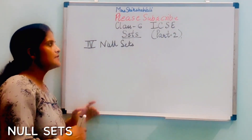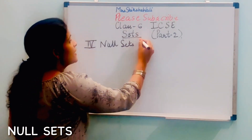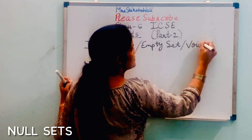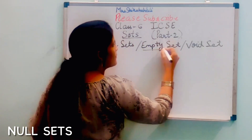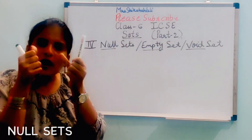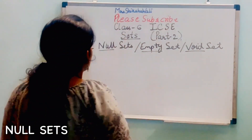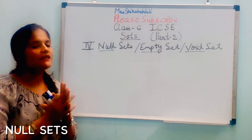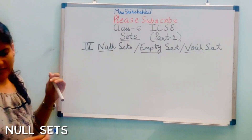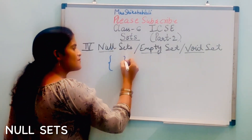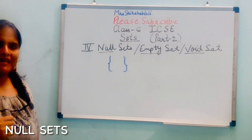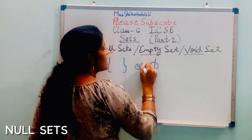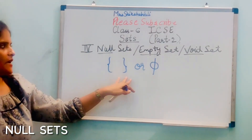The fourth category is null set, also called empty set or void set. Null, empty, and void all mean no element in the set. It is represented either by empty curly braces { } or by the symbol φ (phi).